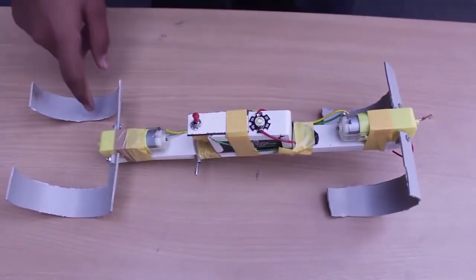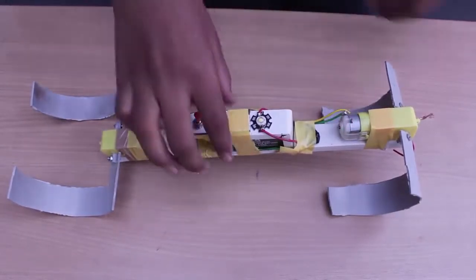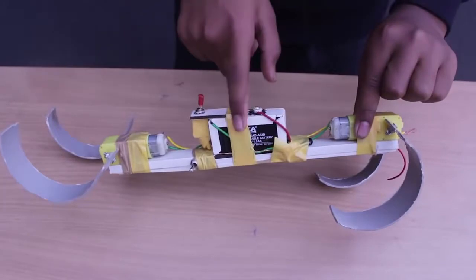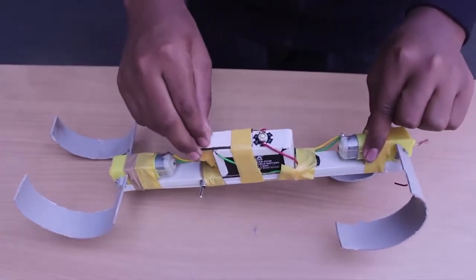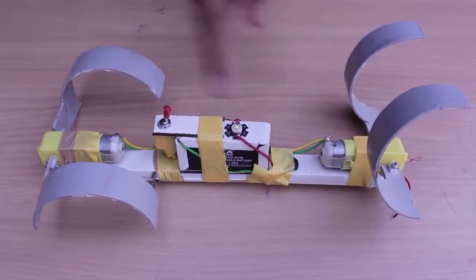You can see this crawling robot from all angles. You can see the two dual motors, the battery and the switch in the middle, and the 4 semi-circular wheels at the ends.